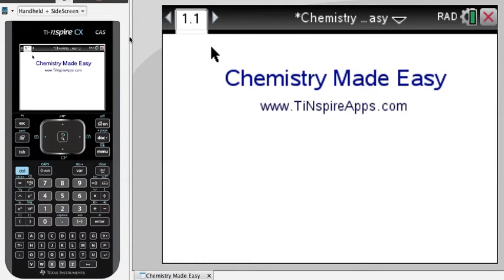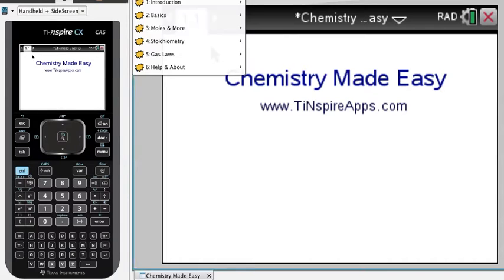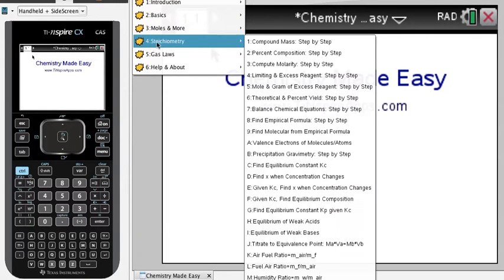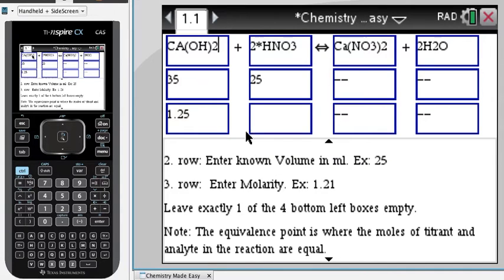Guys, let me show you one of the features of the Chemistry Made Easy app called titrate to equivalence point, dealing with bases and with acids.